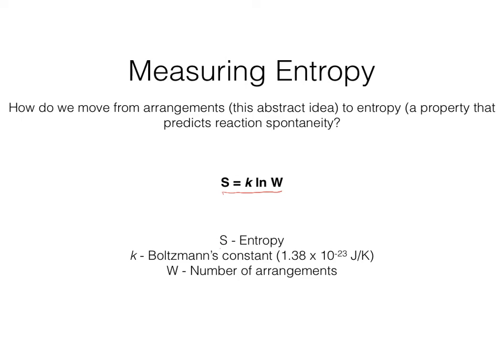Where S is the entropy of the system — the inherent entropy of something, thinking about the entropy of my shoes in the cubby. K is Boltzmann's constant. When you are super famous, you get to have a constant named after you. And W — sometimes given as omega — is the number of arrangements. This is thinking about how many ways can my shoes go into the cubby.